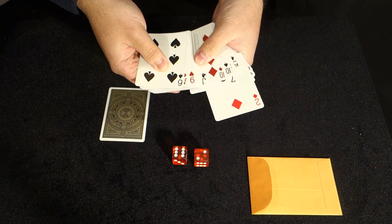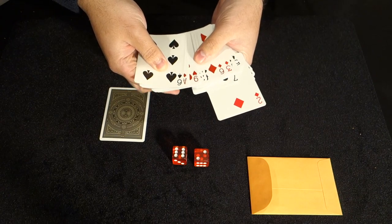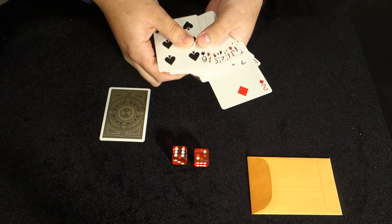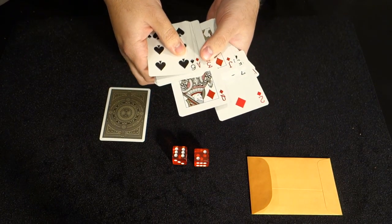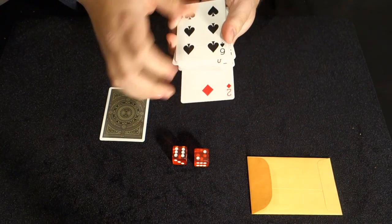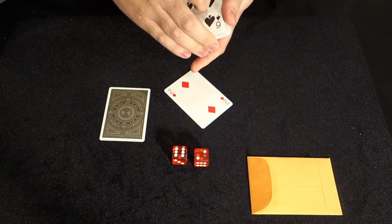And again, you can confirm there is no other two of diamonds in the deck. So had you set top, it would have been one, two, three, four, five, six, seven. The queen of diamonds. Totally different card. But today we ended up on the two of diamonds.